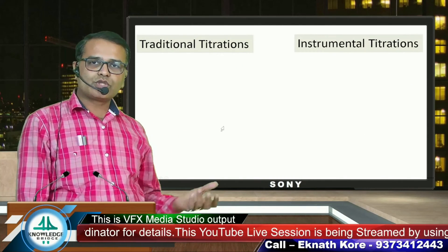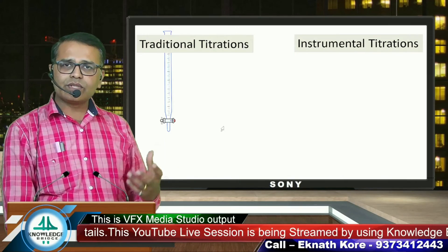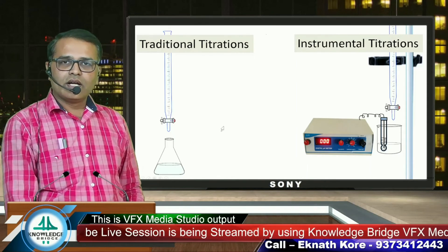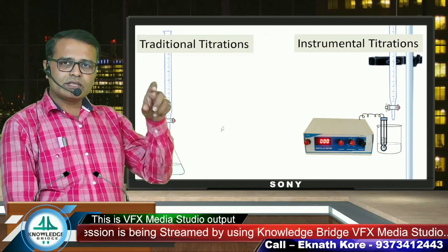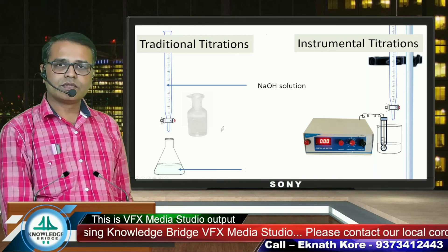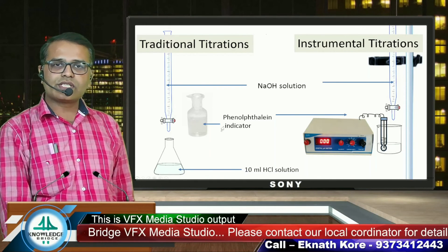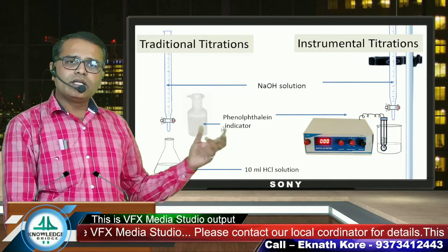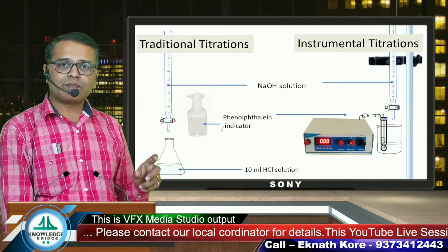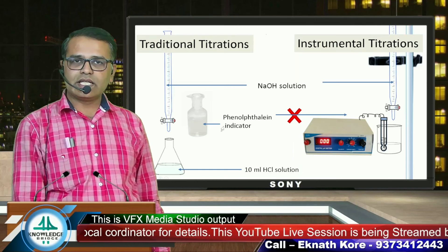As we know, there is traditional titration and instrumental titration. In 11th and 12th class, you might have studied various types of titrations. Whenever we perform a titration, we need a burette and a conical flask. In the instrumental method, we require these basic parameters, but here we also require some instrument. Let us consider NaOH solution is taken in the burette and HCl solution is taken in the conical flask. In both cases, whether it is the instrumental method or the traditional method, the solutions are the same — the difference is that here we require some instrument, and here we don't need to use any indicator.